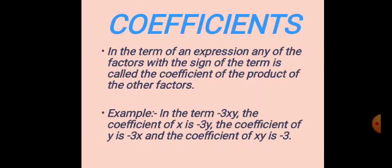Coefficients: In the term of an expression, any of the factors with the sign of the term is called the coefficient of the product of the other factors. For example, in the term −3XY: if I ask what is the coefficient of X, we leave X — what is left is −3Y, so the coefficient of X is −3Y. If I ask the coefficient of Y, we leave Y — what is left is −3X, so the coefficient of Y is −3X. And if I ask the coefficient of XY, the answer is −3.